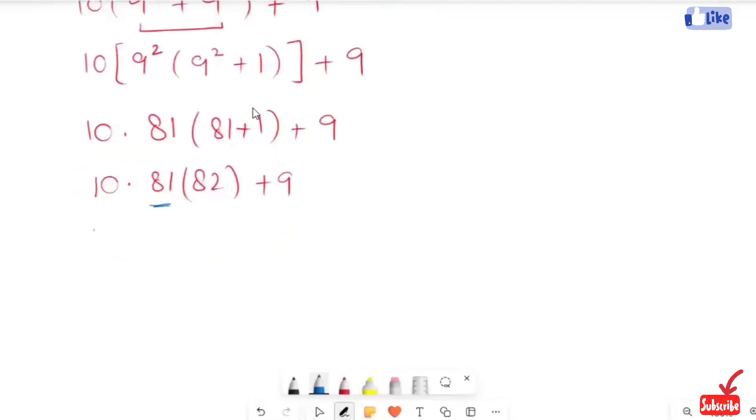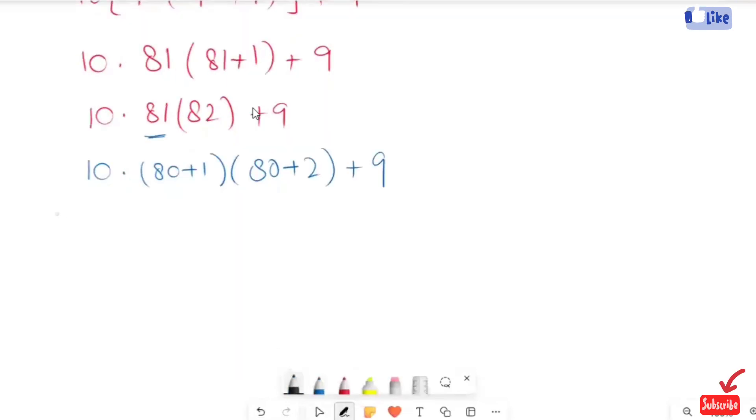Now, the next expression we will get, here I'm going to write this 81 as 80 plus 1, and this I'm going to write as 80 plus 2 plus 9. Now, from here I will write x as 80.